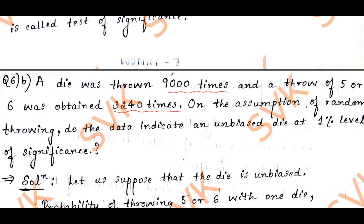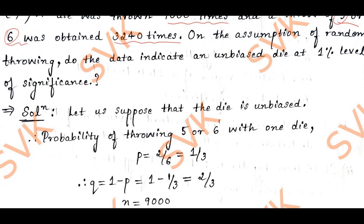Here they have provided how many times the die has been thrown. A die consists of 6 faces. We are obtaining only 5 or 6, so when finding p we get 2 by 6. Since we get only 2 faces out of 6, p equals 2/6, which equals 1/3.